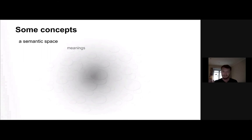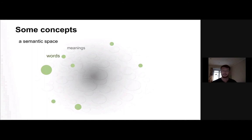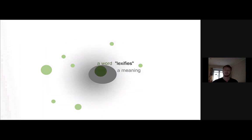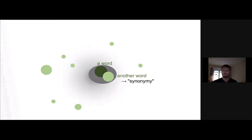I'm going to start with some very basic concepts, because I want everybody to be on the same page. Imagine a semantic space of a language — it has a bunch of meanings in it, and there are some words which lexify some of these meanings. Here, for example, we have a slice of the space — a meaning or a concept. We have a word that lexifies that meaning; maybe the concept is 'frozen water' and the word lexifying that is 'ice.' If we have another word that pretty much means the same thing, we call it synonymy.